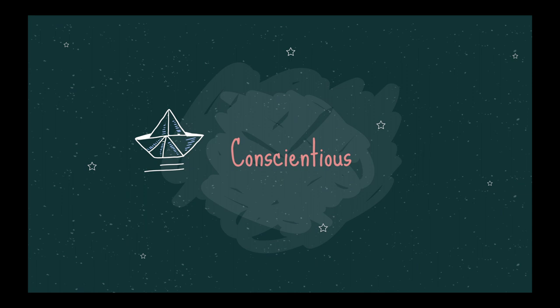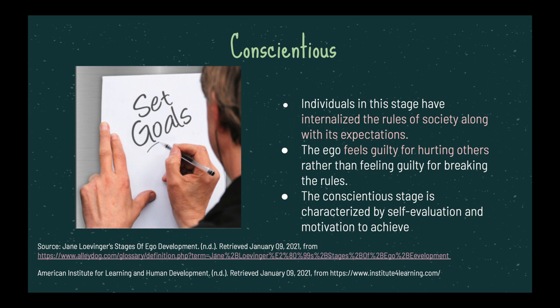The next stage is the conscientious stage. During this stage, individuals have internalized the rules of society along with its expectations. The ego feels guilty for hurting other people's feelings rather than simply breaking the law or rules. This stage is characterized by self-evaluation and motivation to achieve. After becoming self-aware of our self-doubt and self-criticism, we derive our insecurities from the expectations of society by comparing our accomplishments at a certain age to others. For example, because society rewards people who become CEOs at age 22, if you haven't accomplished that kind of success, you'll have more self-criticism and self-doubt. But this also motivates us to achieve more in comparison to those we look up to.